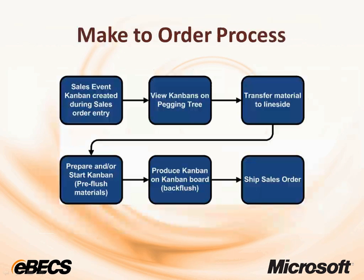Next we'll jump into production mode. At this point we will look at the Kanban transfer board and we will see any materials that need to be moved to the line side cell and then transfer those materials there. We will then go to the Kanban board for process jobs where we will prepare and/or start the Kanban, which could pre-flush materials if our company chooses to consume materials within the system. The next step would be to actually complete the Kanban — we'll produce it on the Kanban board for process jobs, and we could also back flush the materials at that point in time.